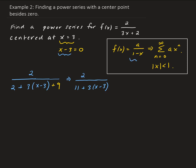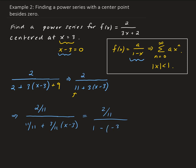We have to go back and use the standard form. I want to make this position 1, so we need to divide every term by 11. This gives us 2 over 11, divided by 11 over 11 plus 3 over 11 times x minus 3. Because we need the form 1 minus x with a negative, we put a negative here so we have a double negative to get a positive.